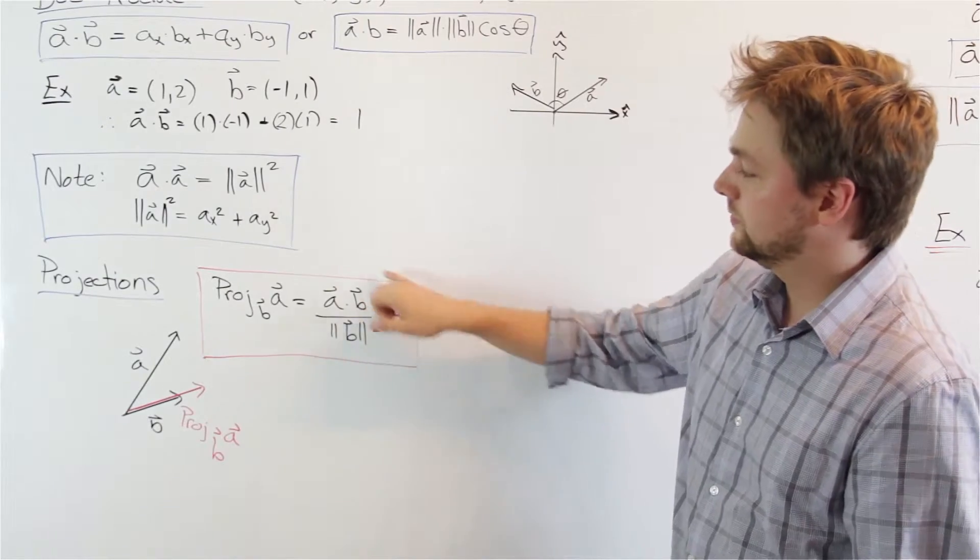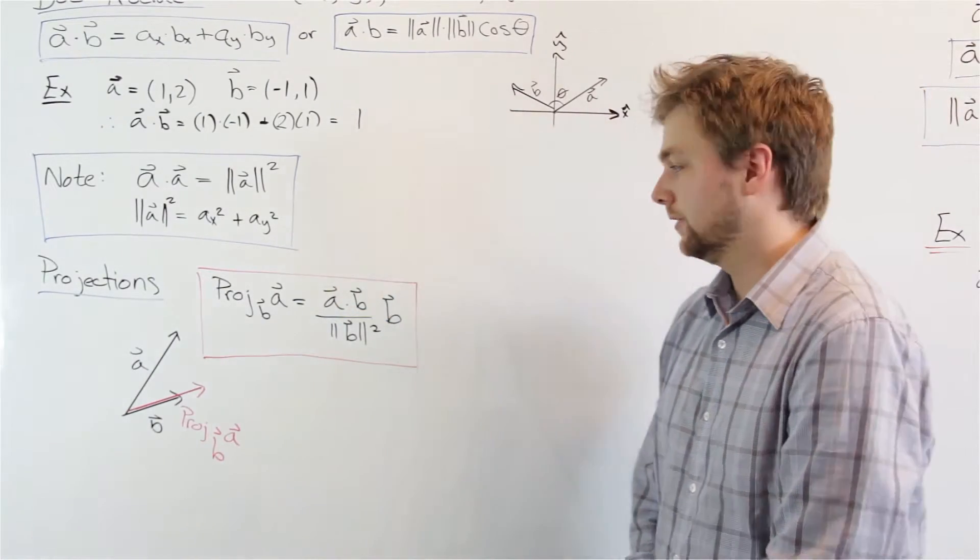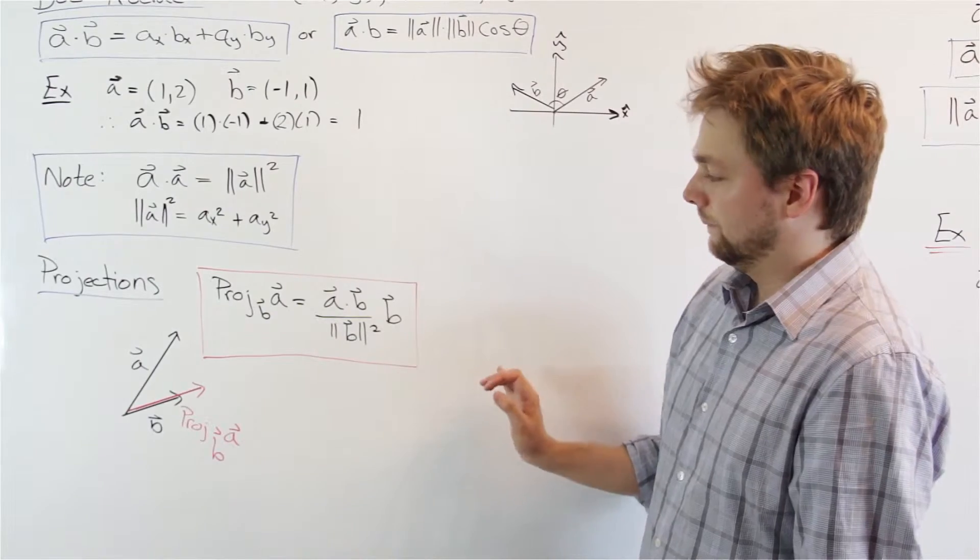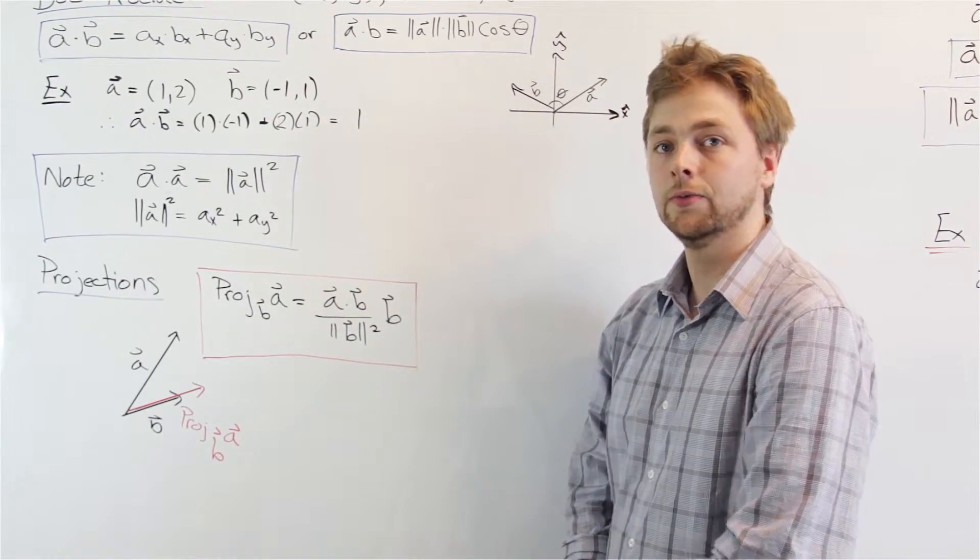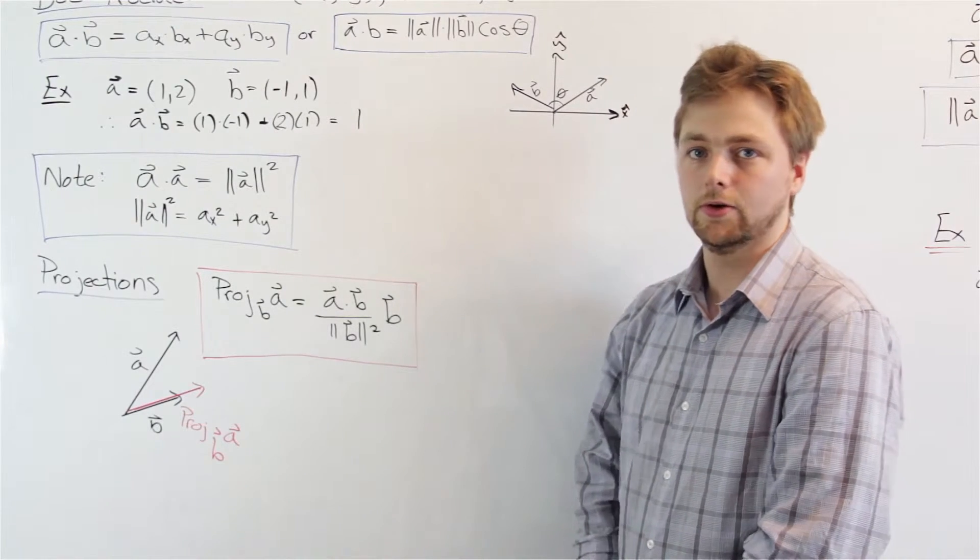In general, for this formula, b does not need to be a unit vector, hence where these other scalars come from. And we can use this to solve problems such as shadows. We'll see several examples of this in our homework.